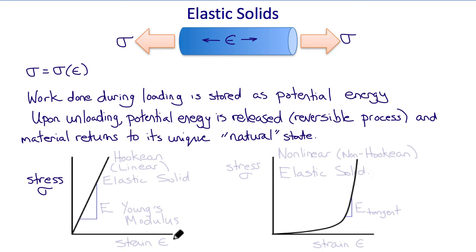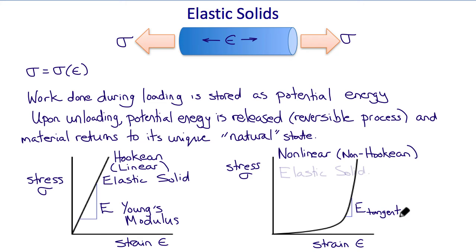If we measure the stress sigma as a function of the strain epsilon in many common elastic solids used in engineering, then we often get a straight line and the slope of that line E is called the Young's modulus. A material that satisfies this stress-strain relation is called a Hookean or linear elastic solid. However, many tissues and materials in biomechanics have a non-linear relationship between the stress and the strain. And therefore, the Young's modulus depends on the strain and we call it the tangent modulus. So this is an example of a non-Hookean elastic solid.